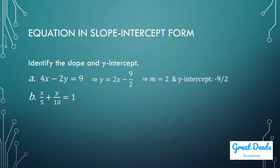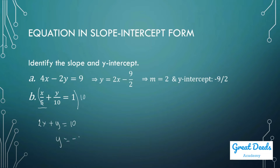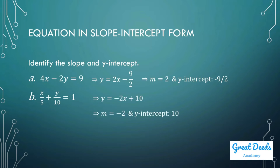For letter B: x/5 plus y/10 equals 1. There are many ways to write this in slope-intercept form. I multiply both sides by the LCD, which is 10. So 2x plus y equals 10, and you can easily write this as y equals negative 2x plus 10. This line has a slope of negative 2 and a y-intercept of 10.